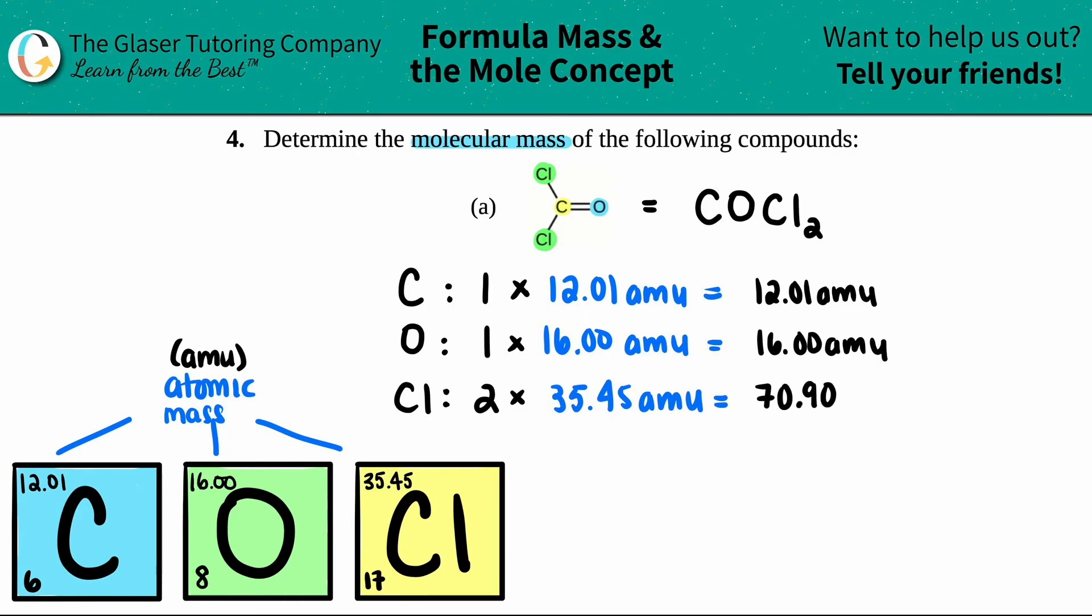And now I have to find the molecular mass or the total mass of the compound. So what am I going to do with these numbers? Yeah, all I got to do is just add them up. So I had that chlorine value plus 16 plus 12.01, and I get 98.91 amu. And that is the total molecular mass or atomic mass, molecular mass of this compound, the COCl2, and that's it.